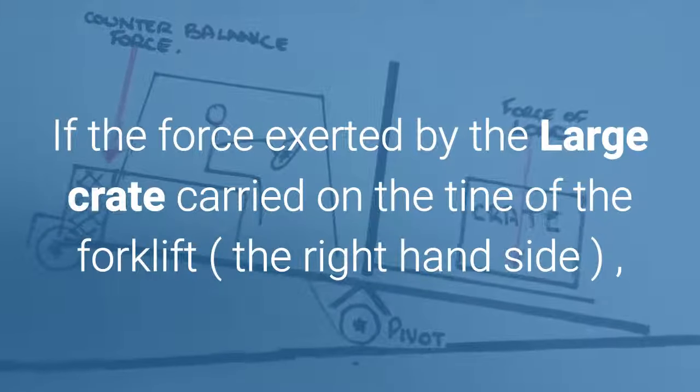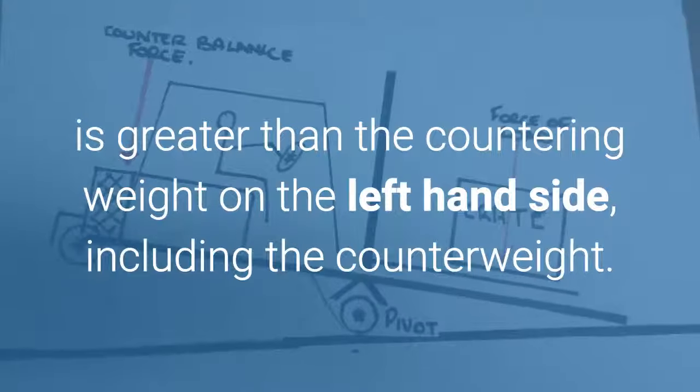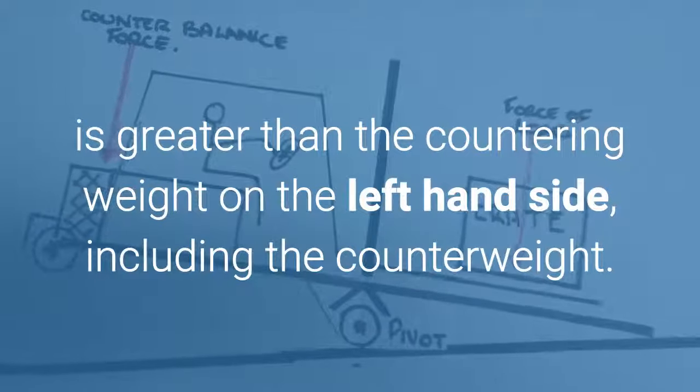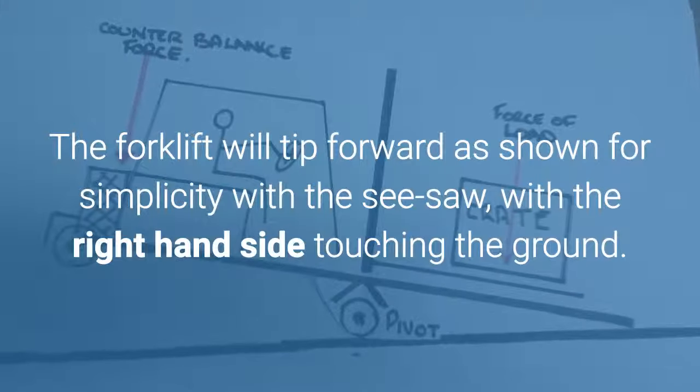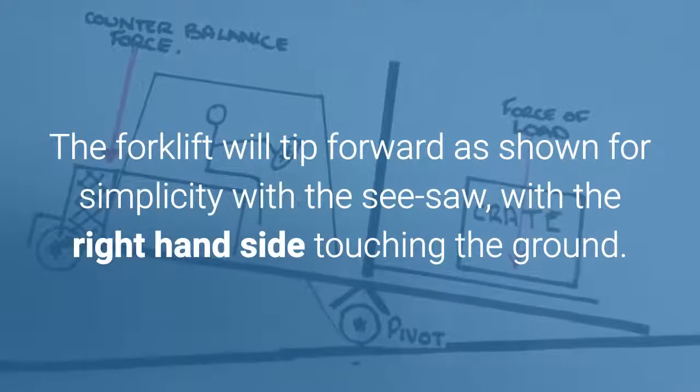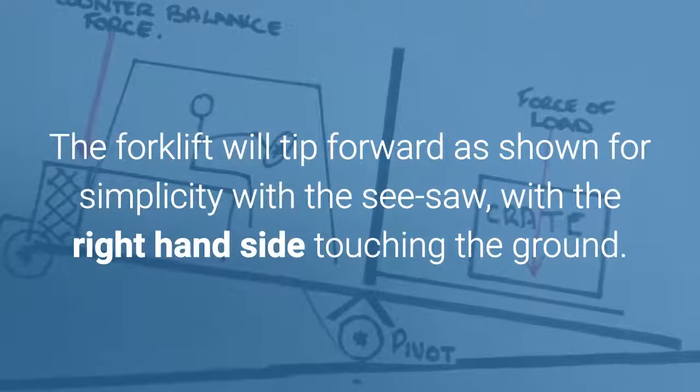If the force exerted by the large crate carried on the tine of the forklift, the right hand side, is greater than the countering weight on the left hand side, the forklift will tip forward, as shown for simplicity with the seesaw, with the right hand side touching the ground.